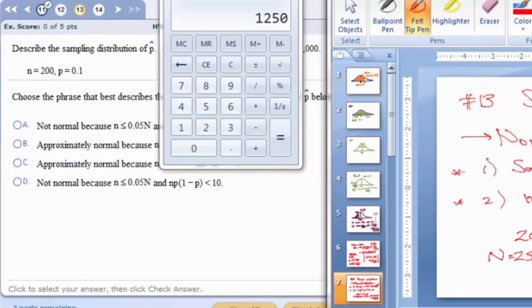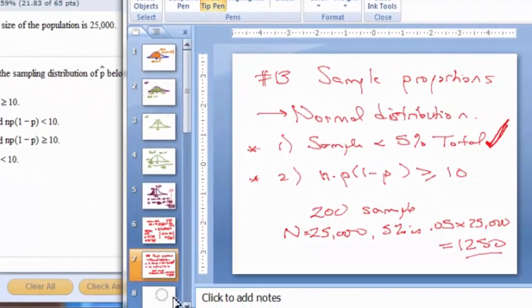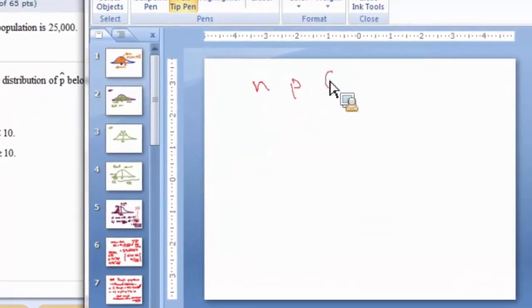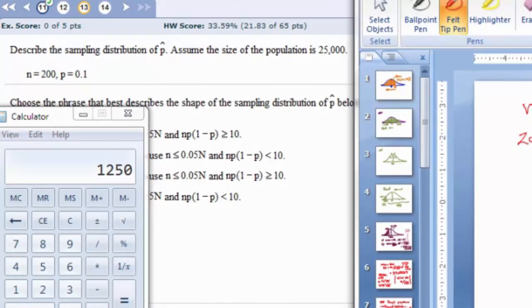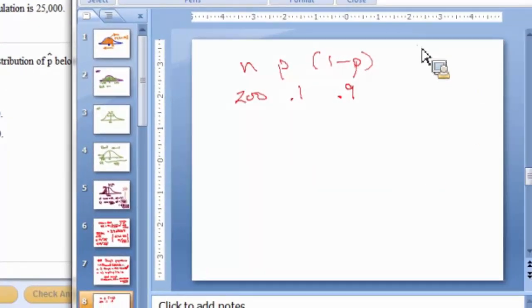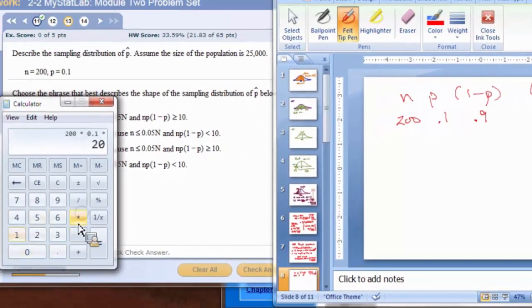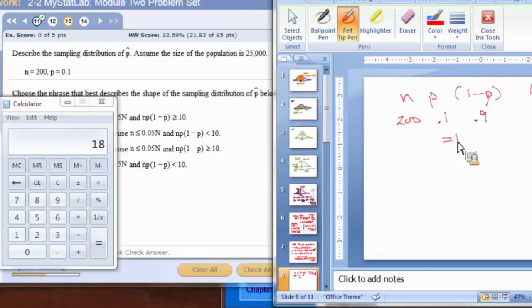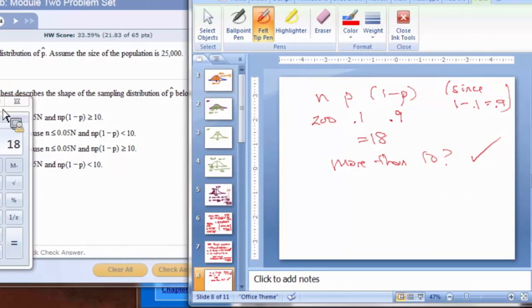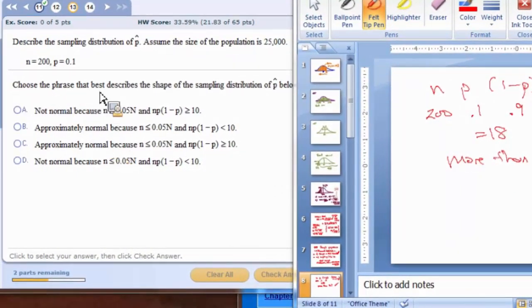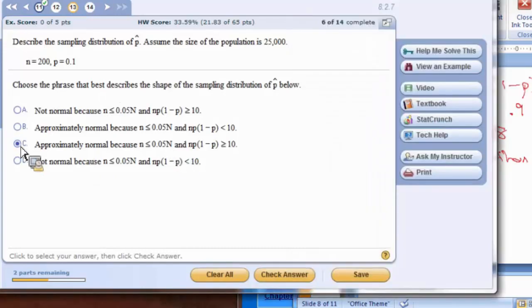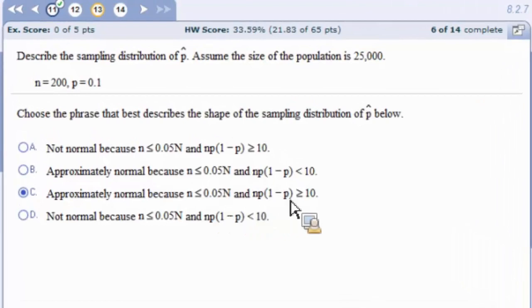Then the next one, NP times 1 minus P, that's a straight calculation. We're told that N is 200. We're told that P is 0.1. If P is 0.1, then 1 minus P is 0.9. So we have to multiply these together. 200 times 0.1 times 0.9 equals, so in our case, this equals 18. Is it more than 10? Yes. So both of our conditions are satisfied. So yes, we can do it because our sample is small enough and this NP times 1 minus P is big enough.